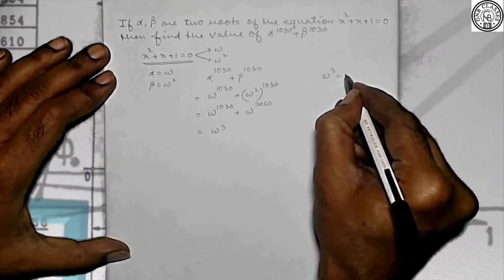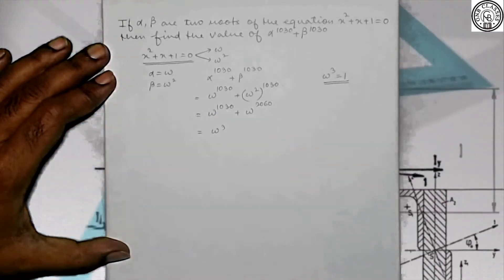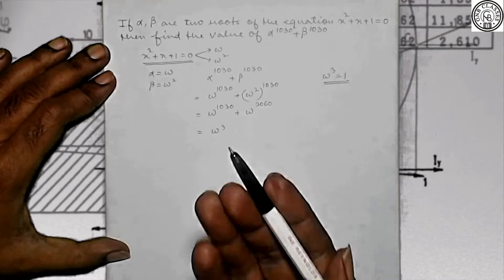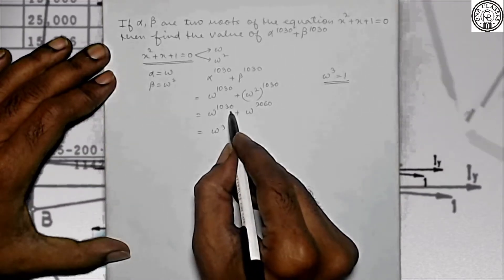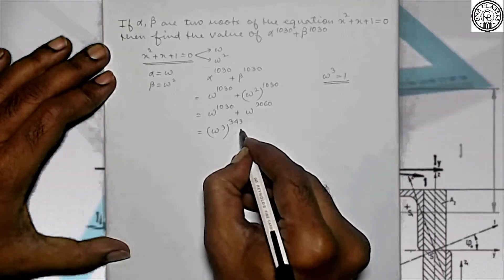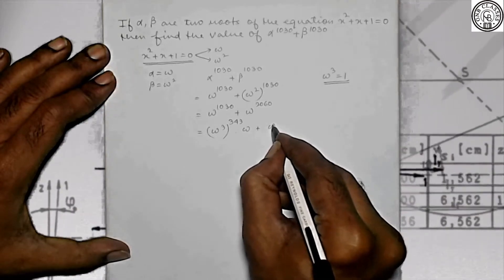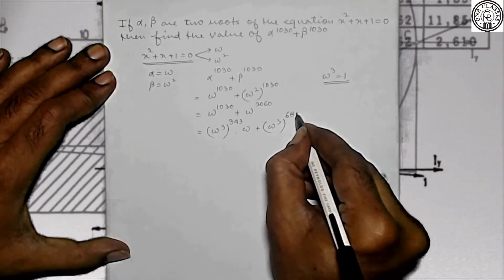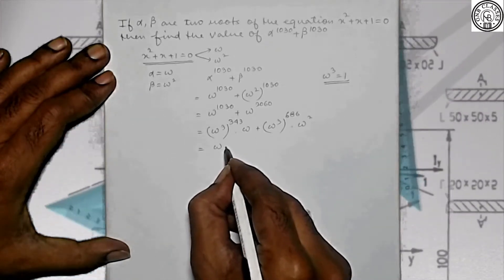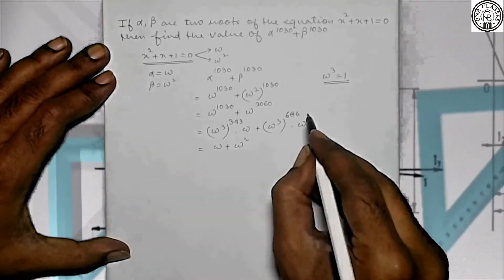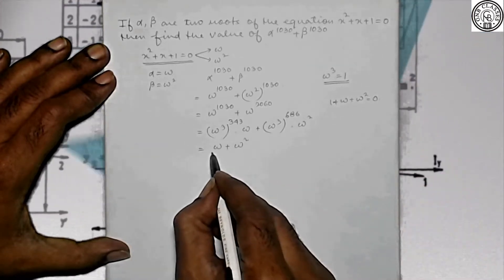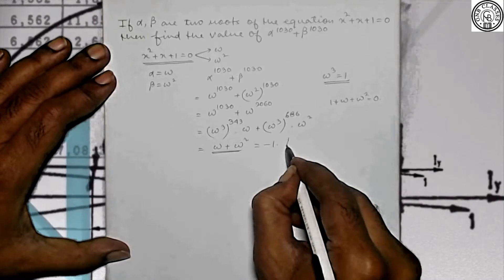Because we know that omega cube is 1, we will use the properties of omega here. Now, 1030 can be written as: omega cube whole to the power 343 into omega, plus omega cube whole to the power 686 into omega square. Since omega cube equals 1, this gives omega plus omega square. And we know that 1 + omega + omega² = 0, so omega + omega² = -1, and that is your answer.